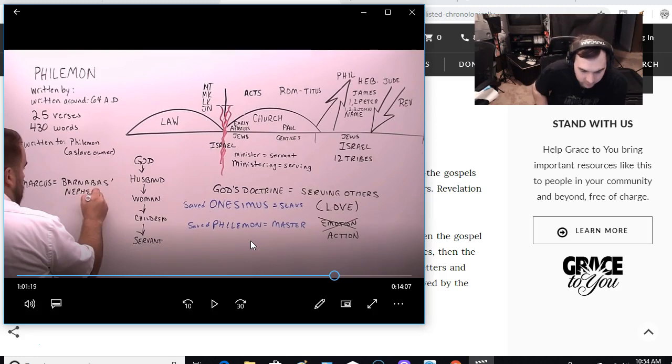1 Timothy, chapter 6, verse 2, says, And they that have believing masters, let them not despise them, because they are brethren, but rather do them service, because they are faithful and beloved, partakers of the benefit. These things teach and exhort.